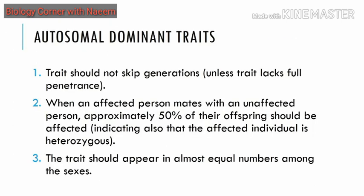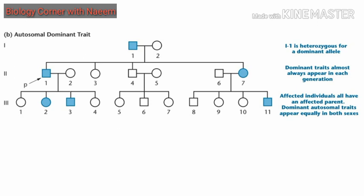Next is the autosomal dominant trait. Dominant traits, whether autosomal or sex-linked, do not normally skip generations. When an affected person mates with an unaffected person, 50 percent of their offspring should be affected — this is your activity to solve on paper. Traits should appear in almost equal numbers among both sexes, as autosomal traits are expressed equally in males and females. Next is an autosomal dominant trait pedigree to be solved by you.